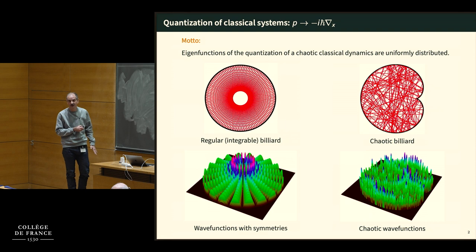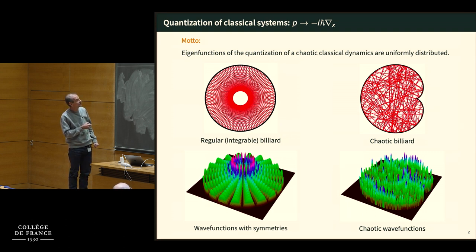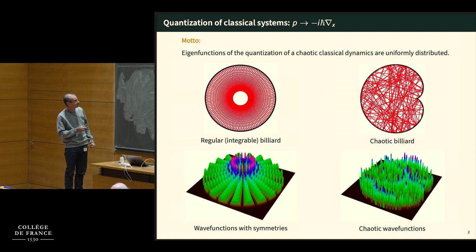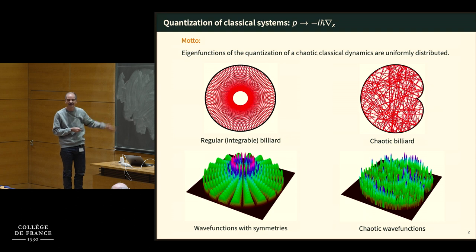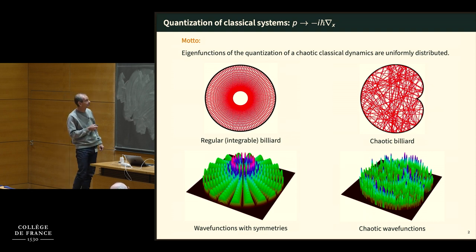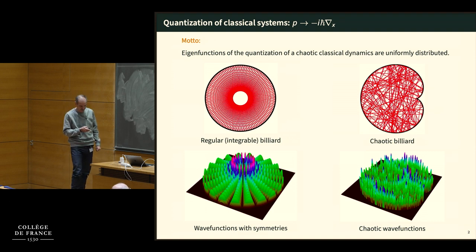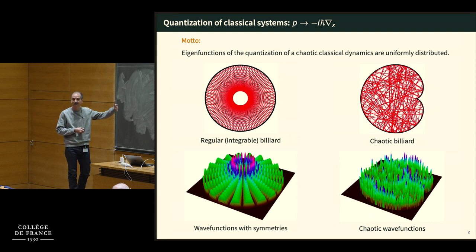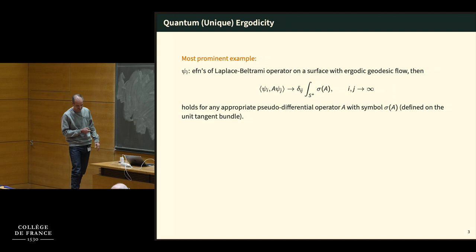Now you quantize this system. Even without a potential, quantization here just means you look at the Laplacian — the kinetic energy p-squared is changed to minus the Laplacian, perhaps with Planck's constant. Then you look at the eigenfunctions of this operator. Here is how the eigenfunctions of the Laplacian on the disk look: one very high energy eigenfunction — precisely |ψ|², the level sets of the modulus. You see very nice regularity and rotational symmetry. In the chaotic system, the corresponding eigenfunctions are very chaotic. One expects that the regularity or chaoticity of the classical system determines the corresponding picture in the quantum system.